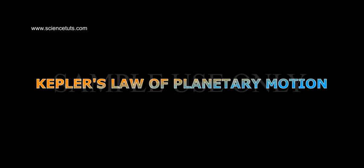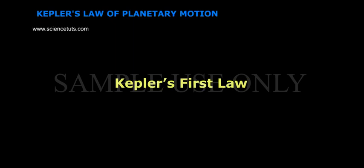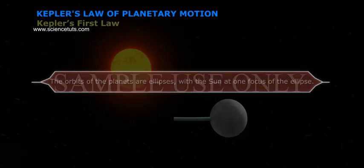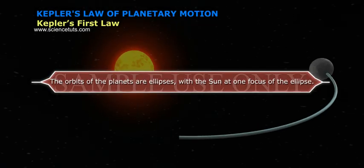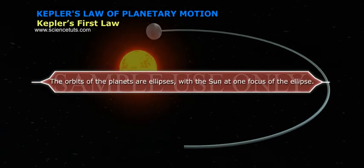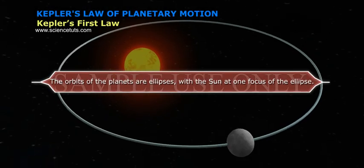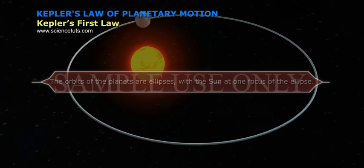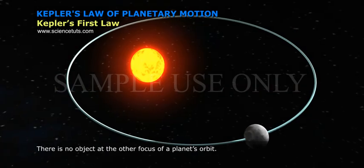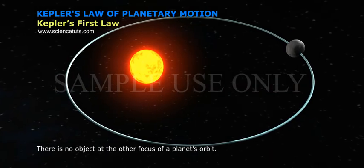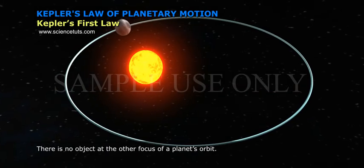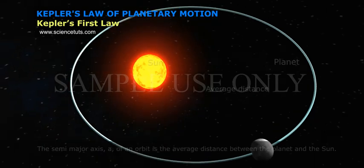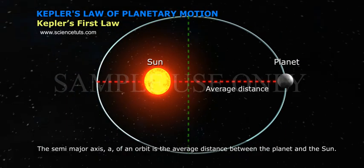Kepler's law of planetary motion. Kepler's First Law: the orbits of the planets are ellipses with the Sun at one focus of the ellipse. There is no object at the other focus of the planet's orbit. The semi-major axis 'a' of an orbit is the average distance between the planet and the Sun.